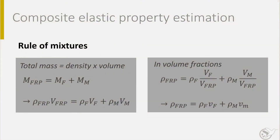To start with the density, the rule of mixtures is applied as follows. The total mass of the composite is the sum of the mass of the fibers and the mass of the polymer we put in the composite. Making a composite in the lab or factory, we do that by weighing the constituents. If we rewrite the mass as a product of density and volume, we get the second formula. Realize that we assume a perfect mixture, so no voids nor porosity are inside the composite.